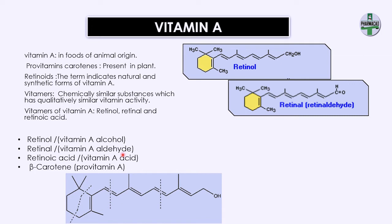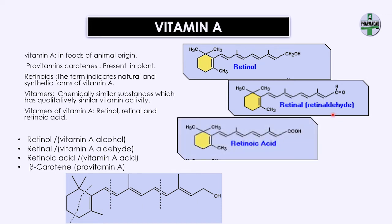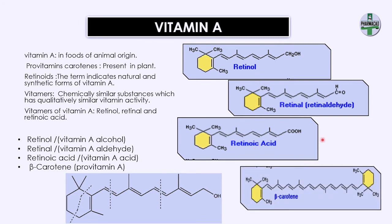The second vitamer is retinal or retinaldehyde, which is vitamin A aldehyde. Retinal is obtained by oxidation of retinol, so vitamin A alcohol and vitamin A aldehyde are interconvertible. Initially, retinaldehyde was also called retinene. Retinoic acid is obtained when retinaldehyde or retinol undergoes further oxidation, but retinoic acid is not interconvertible back to retinal or retinol. Beta carotene, the provitamin, forms 2 moles of retinol in the intestine, but in humans this conversion is insufficient, so beta carotene has only one-sixth the vitamin A activity of retinol.